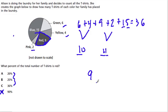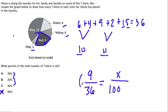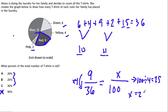So we have 9 red out of 36, and we want to know, as a percent, what this is — so what is that out of 100? Well, 9 times 4 is 36. So what times 4 is 100? That's the same thing as 100 divided by 4, which is 25. So x equals 25, since 25 times 4 is 100, and that's the same thing as 9 times 4 is 36. So our percent for red is 25%.